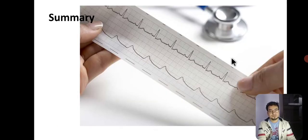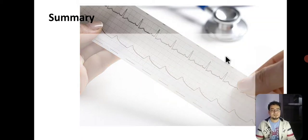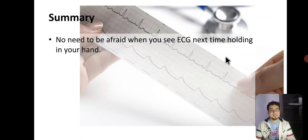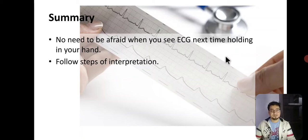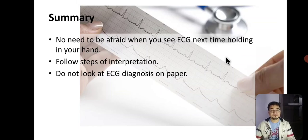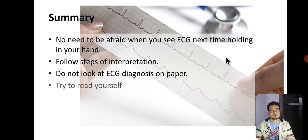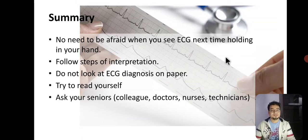In summary, there is no need to be afraid when you see an ECG. Follow the six to seven steps of interpretation and they will lead you to a diagnosis. Do not look at the computer-printed ECG diagnosis first — that is often wrong. Make your own diagnosis, then compare. Ask your seniors, colleagues, doctors, nurses, and technicians, and always correlate clinically. Sometimes wrong lead placement or disconnected leads give wrong ECG waveforms.